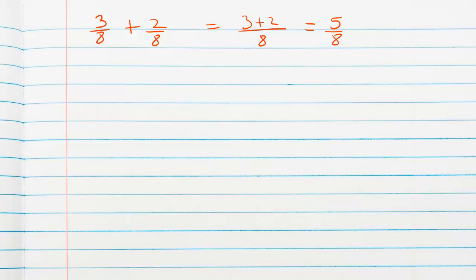For subtraction we have the similar approach: 5 over 7 minus 1 over 7 is nothing but 5 minus 1 over 7, where 7 is the common denominator, and we get 4 over 7.